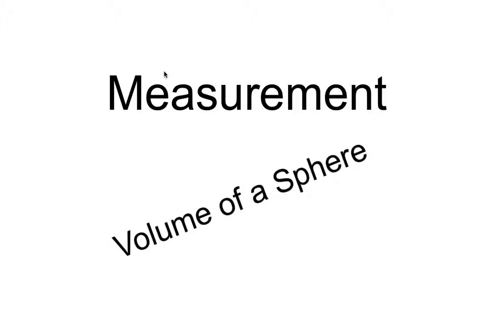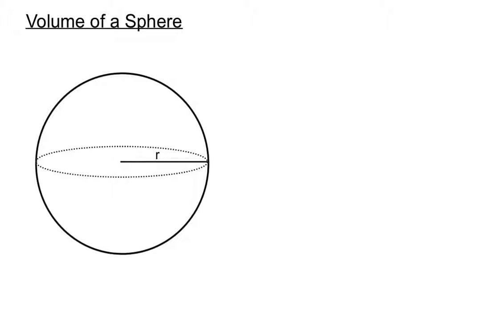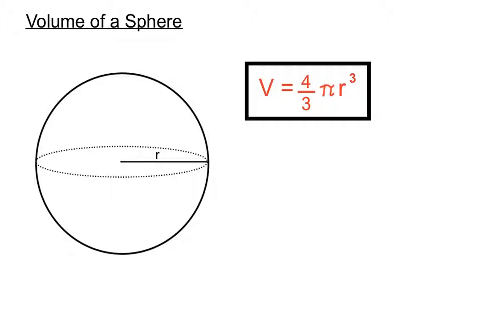Hello, welcome back. This is a measurement video on the volume of a sphere. Let's have a look at how we find the volume of a sphere. There's a sphere there — we have a radius involved, which goes from the very center of the ball right to the edge, any point on the edge. The formula for the volume of a sphere is 4/3 times pi times the radius cubed.